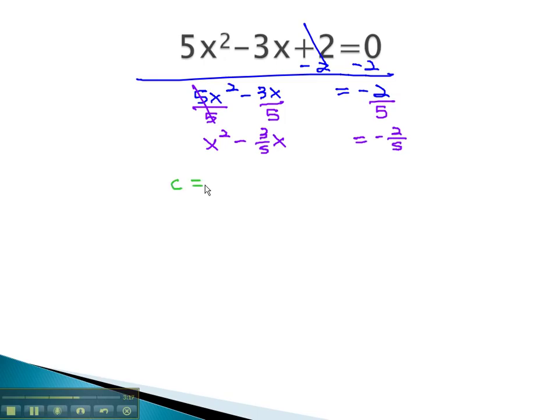We can now find c by taking 1/2 of b, or the -3/5 squared. This is -3/10 squared, or 9/100. By adding 9/100 to both sides, we've completed the square.